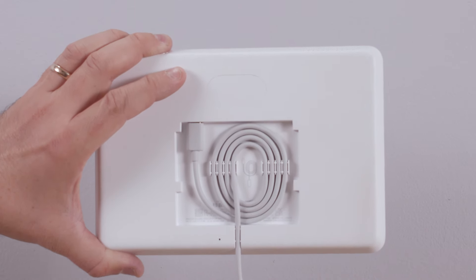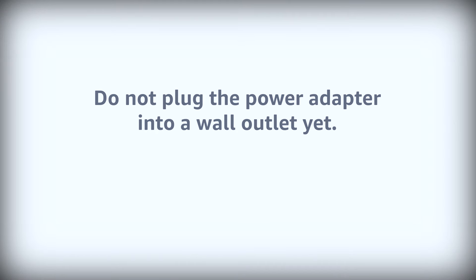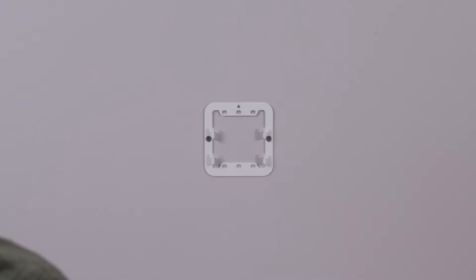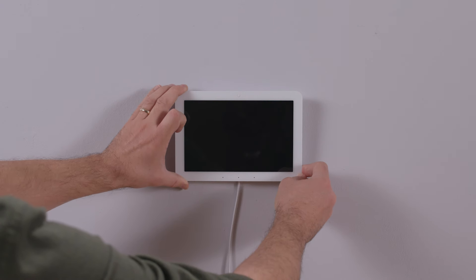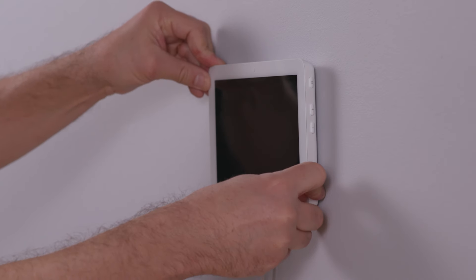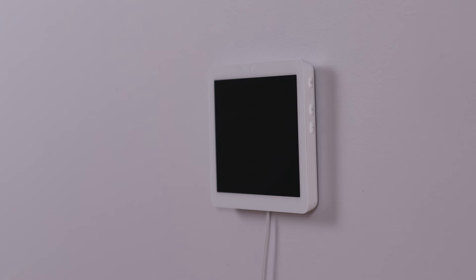Plug the supplied power cable into your device. Do not plug the power adapter into a wall outlet yet. Place the Echo Hub flat over the top of the wall mount, then slide it down. Make sure that all four hooks in the wall mount are engaged with your device. Connect the device power adapter into a wall outlet.